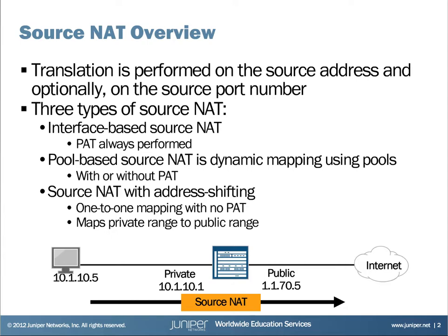The second type of source NAT is pool-based source NAT. We create a pool, and within the pool we have public addresses. We translate our private internal source address to a public address that's in the pool. PAT can be used with or without pool-based source NAT — port address translation is enabled by default.